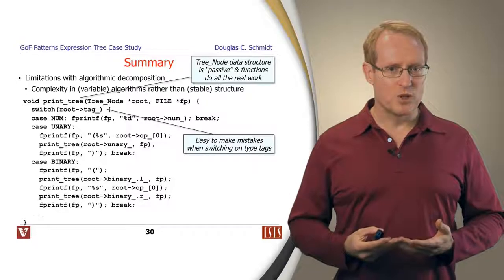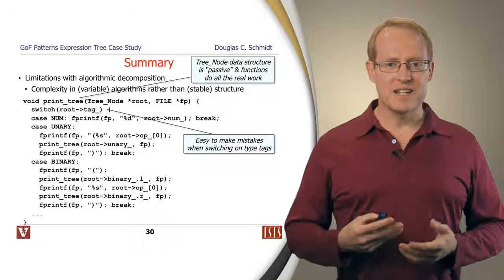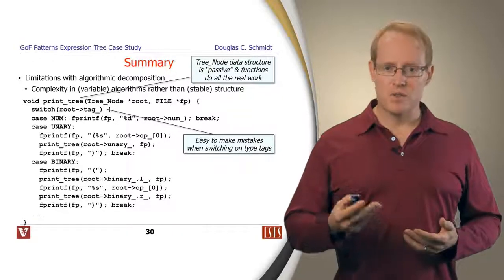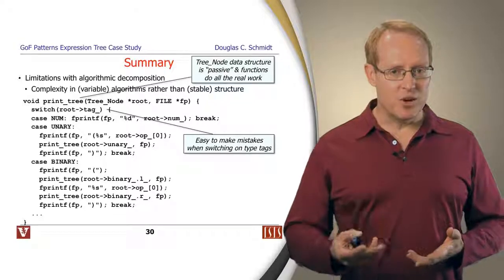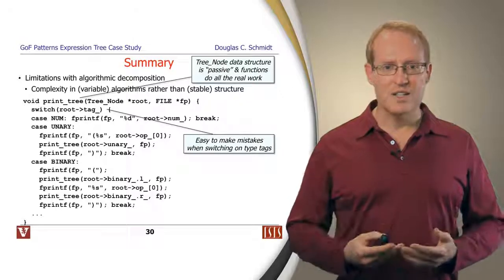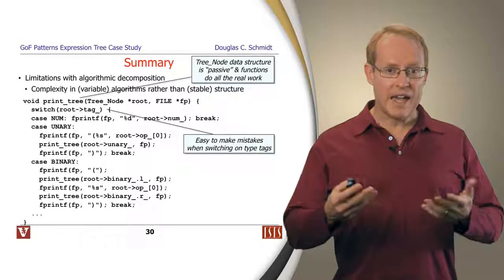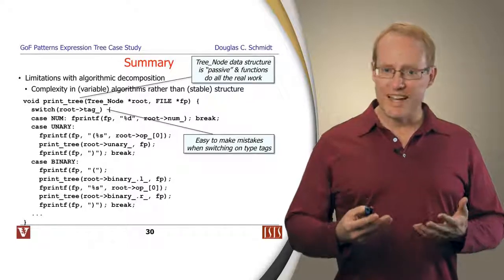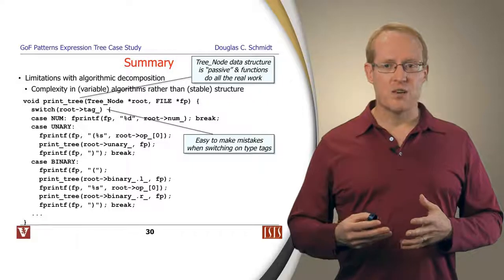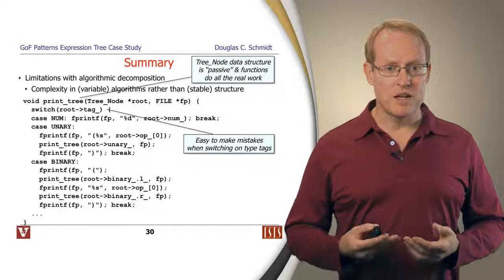Another problem with this particular approach is we're doing switches on type tags. And it's a very widely known problem in C and C++. If you have switches on type tags, it's error-prone. It's easy to forget to put a break statement in so things will fall through to the wrong case. Another problem is if you make changes to your tree node and add new types of nodes, you might forget to go and update some of the cases that you have. And all these things are examples of accidental complexity that can snare an unsuspecting programmer.